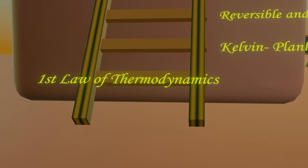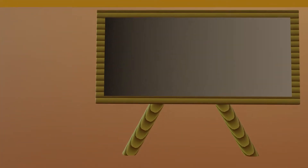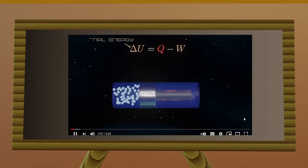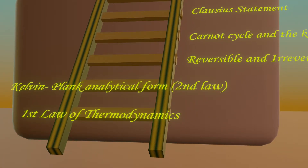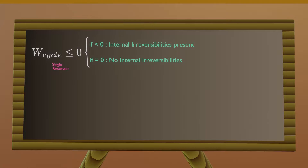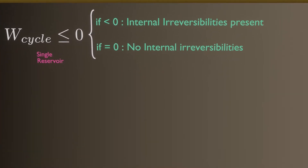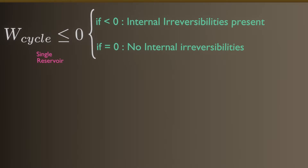I have already described the first law of thermodynamics — it is just an energy balance applied when heat comes into play with a closed system. The second law is also described already, but I haven't talked about the analytical form of the Kelvin-Planck statement of the second law. It would be difficult to understand entropy if we do not talk about this analytical form now.